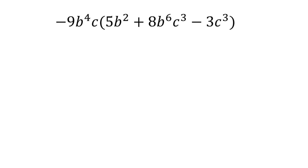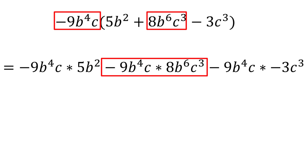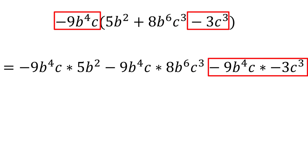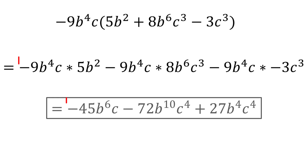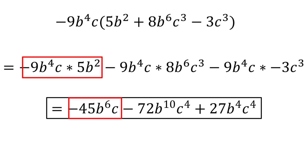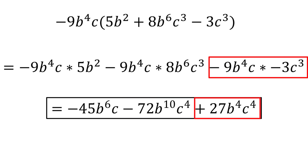Multiplying negative 9b to the fourth c by each term in parentheses, we have negative 9b to the fourth c times 5b squared, minus 9b to the fourth c times 8b to the sixth c to the third, minus 9b to the fourth c times negative 3c to the third. Simply multiply the constants together and add the powers of similar variables. We have negative 45b to the sixth c minus 72b to the tenth c to the fourth plus 27b to the fourth c to the fourth, which is our final simplified expression.